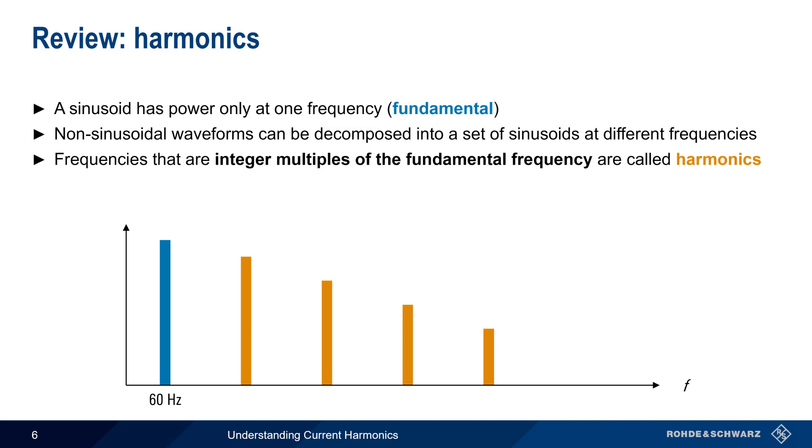Harmonics are those frequencies which are integer multiples of the fundamental frequency. In a system with a mains or fundamental frequency of 60 Hz, this means that harmonics appear at 120 Hz, 180 Hz, 240 Hz, 300 Hz, etc.